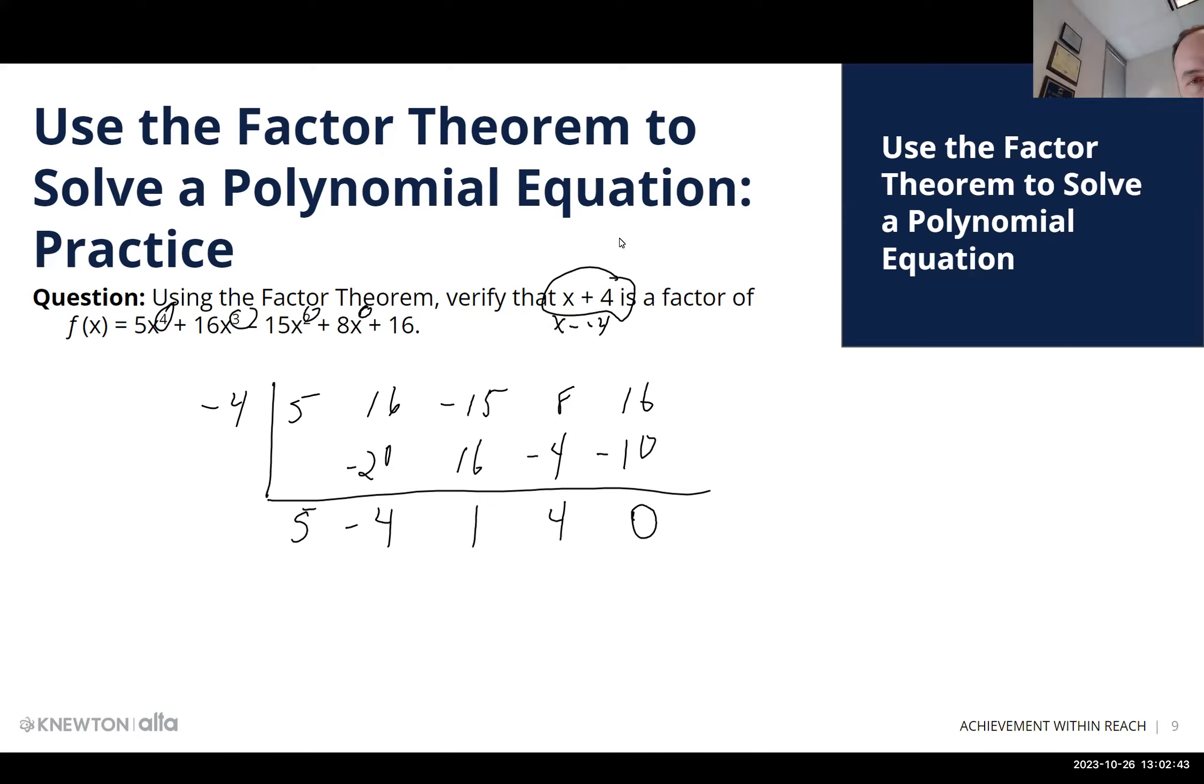And I think it's worth me just explaining that a little more carefully. So it turns out that if you take 5x to the 4th power plus 16x to the 3rd power minus 15x to the 2nd power plus 8x plus 16, that we can, if we were to divide that by x plus 4,